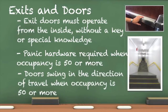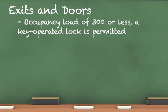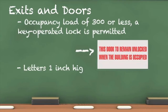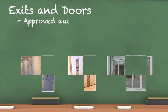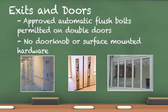There should be no obstructions of any kind. Specific guidelines govern the use of locks and latches in A occupancies. In buildings where the occupant load is 300 people or less, a lock is permitted on the main exterior door. A sign is required above or near the door stating this door to remain unlocked when building is occupied, in letters at least one inch high with a contrasting background. When egress doors are used in pairs, such as double doors, automatic flush bolts are permitted; however, door knobs or other surface-mounted hardware are prohibited.